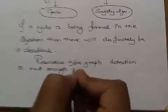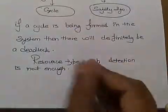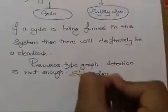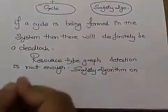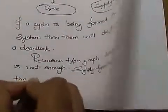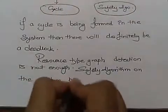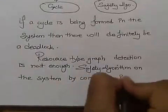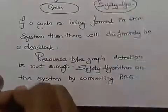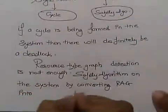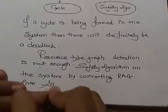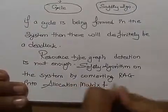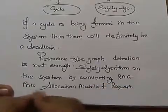We have to apply a safety algorithm to detect the deadlock on the system by converting resource allocation graph into allocation metrics and request metrics.